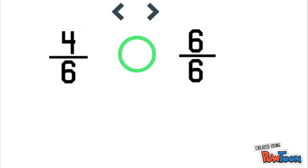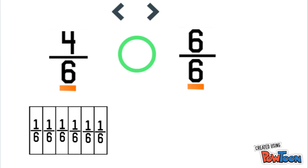Alright, let's try another one. Here we have four sixths and six sixths. Again, we always look at both denominators first and we see that they both have six as a denominator, which means that both of our models can be made out of sixths.